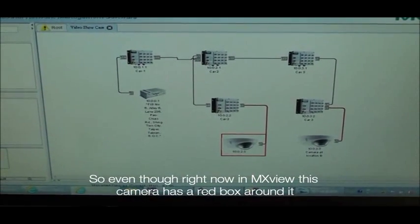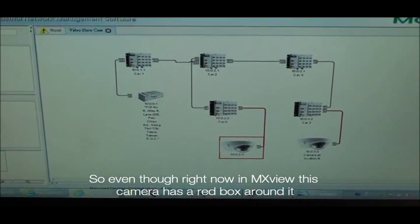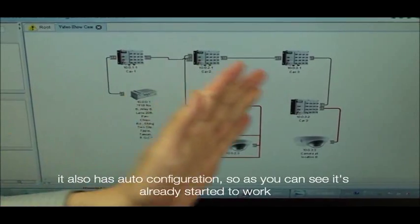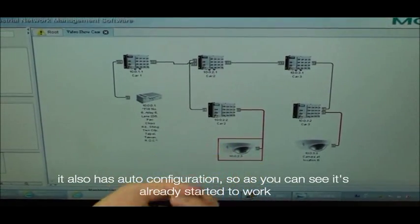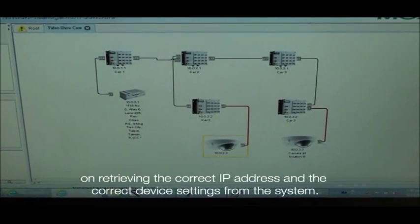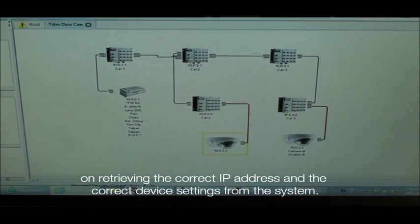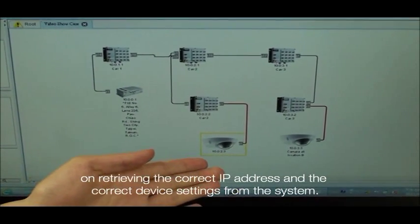So even though right now in MXView, this camera has a red box around it, it also has auto configuration. So as you can see, it's already started to work on retrieving the correct IP address and the correct device settings from the system.